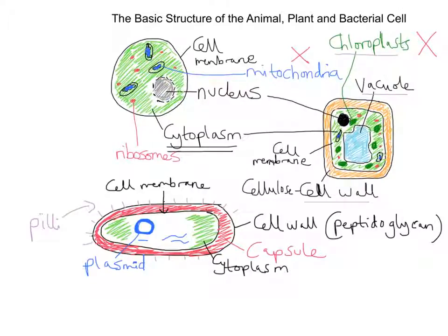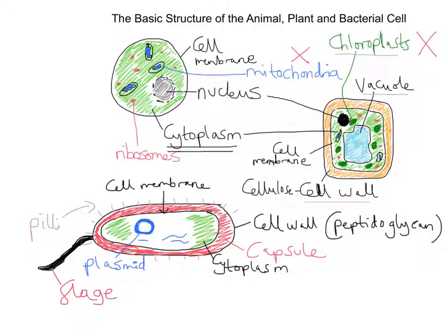This final part I'm going to label is quite unique to the bacteria — it's called the flagellum. It's a tail, and it corkscrews to allow movement of the bacteria. So this flagella tail allows it to move through a corkscrew motion. That would be the basic structure and function of the animal, plant and bacterial cell. This video is sufficient for key stage 3 and certainly for key stage 4. I hope that helps.